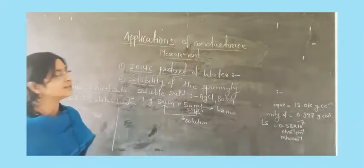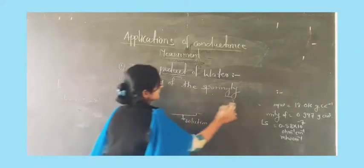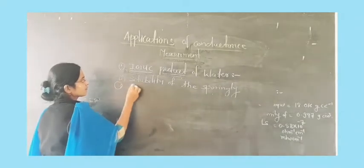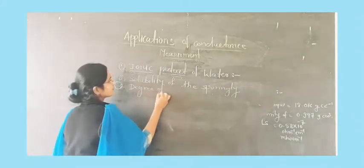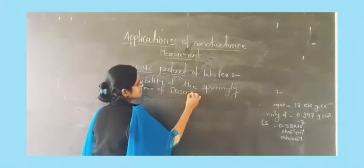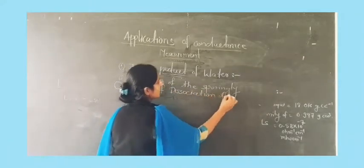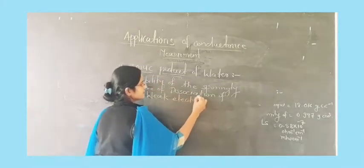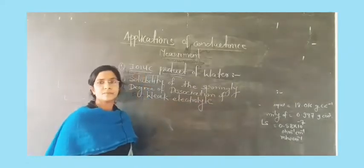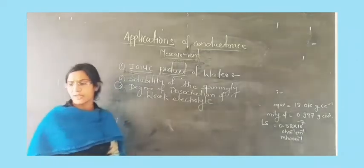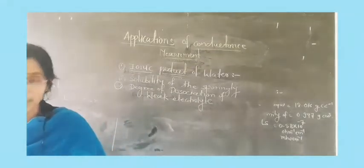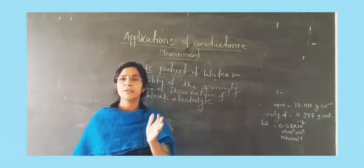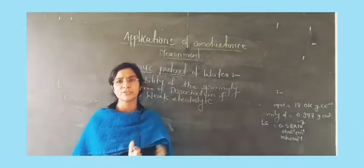Our third application is the degree of dissociation of weak electrolytes. What is the meaning of degree of dissociation of a weak electrolyte? We should understand what a weak electrolyte is. A weak electrolyte is one which partially dissociates in the solvent.